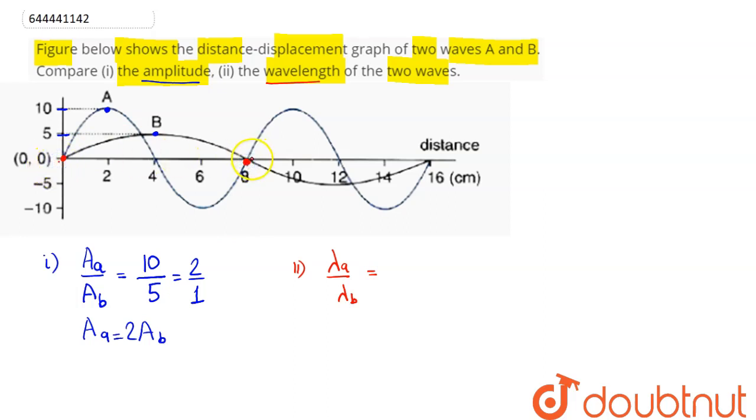from 0 to 8, hence wavelength of A is 8. Whereas in case of wave B, we have wavelength as 16. So this is 8 by 16, which is 1:2. Hence we can say